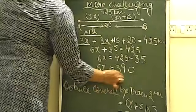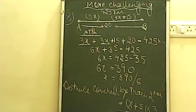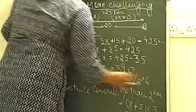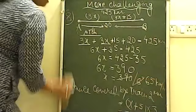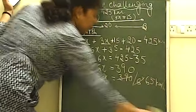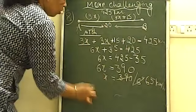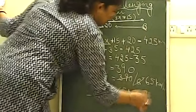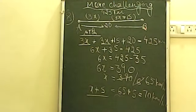The speed of train one is x = 65 km/h. The speed of train two is x + 5 = 65 + 5 = 70 km/h. So the speeds of the two trains are 65 km/h and 70 km/h respectively.